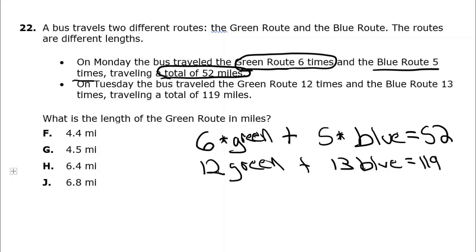Notice that 12 green is twice 6 green. So if I multiply 6 green by negative 2, I'll end up with negative 12 green. I'm going to multiply the entire top equation by negative 2, giving us negative 12 green minus 10 blue equals negative 2 times 52. You can use your calculator for that. That should be negative 104.